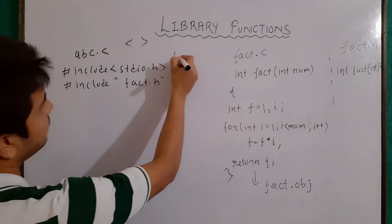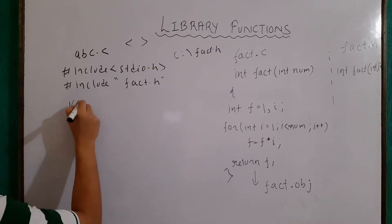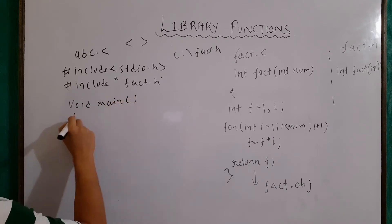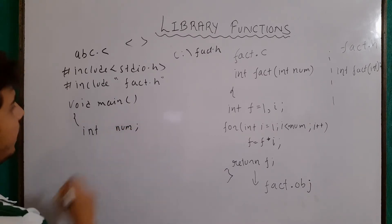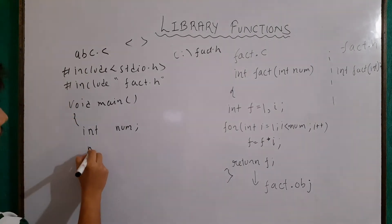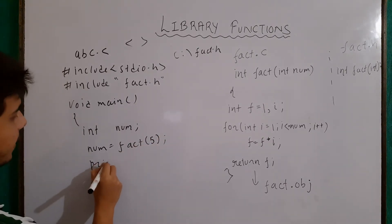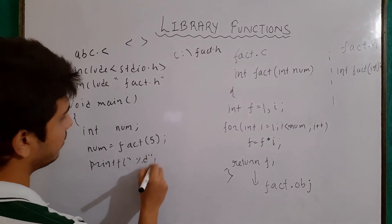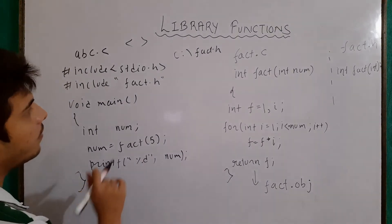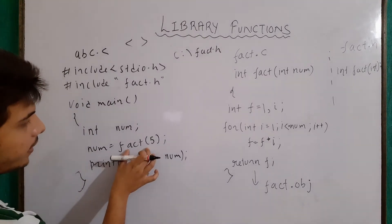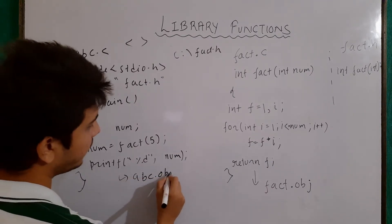We can also specify a path here — for example, something like C:\fact.h. Then inside main, I will write int num. Let's say I want to find the factorial of 5: num = fact(5). After that I'll write printf("%d", num). So the prototype of our function is defined and we are calling it from here. After compilation of this file, another file — abc.obj — is created, though the extension may vary according to the compiler.